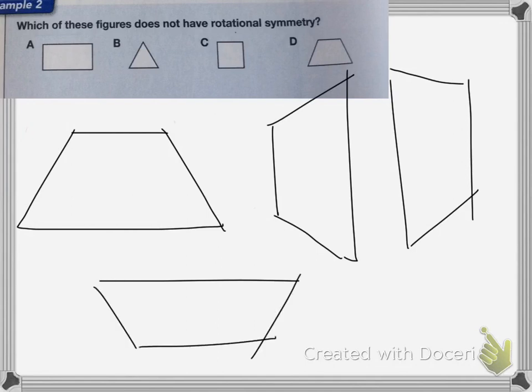So none of those look the same, so the figure that does not have rotational symmetry is D, the trapezoid. Okay, and that's it for this lesson.